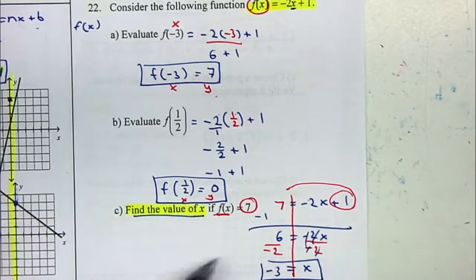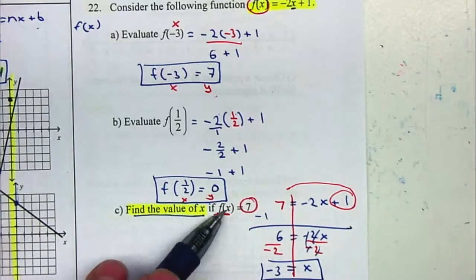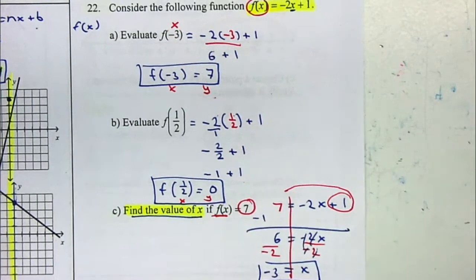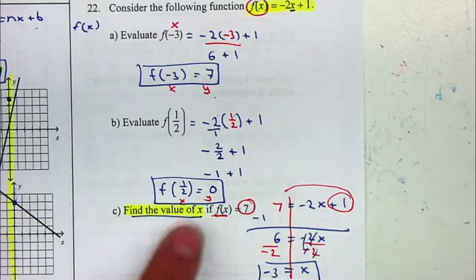What they're asking is, what is the value of x that whenever I plug it in, is going to give me a 7. And in this case, it will be negative 3. If you notice, it kind of matches what we have on letter a. But remember, you're trying to find the value of x.